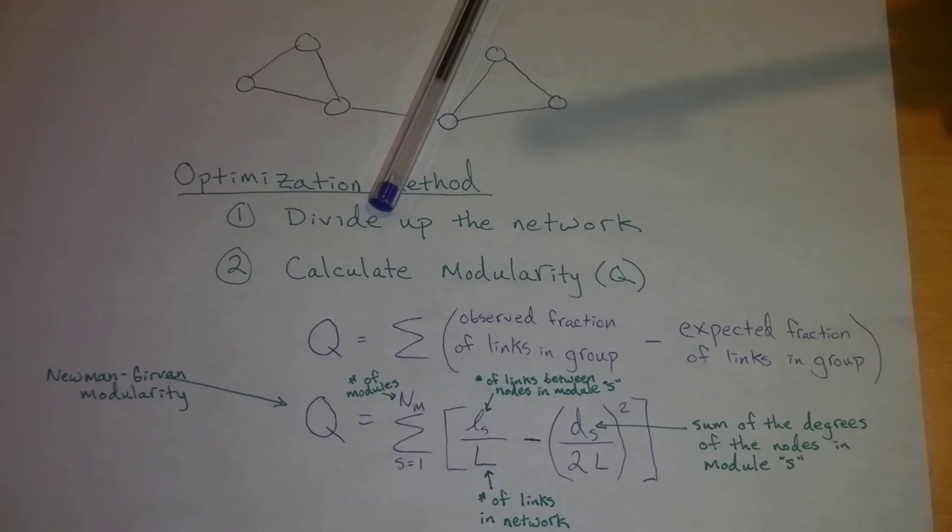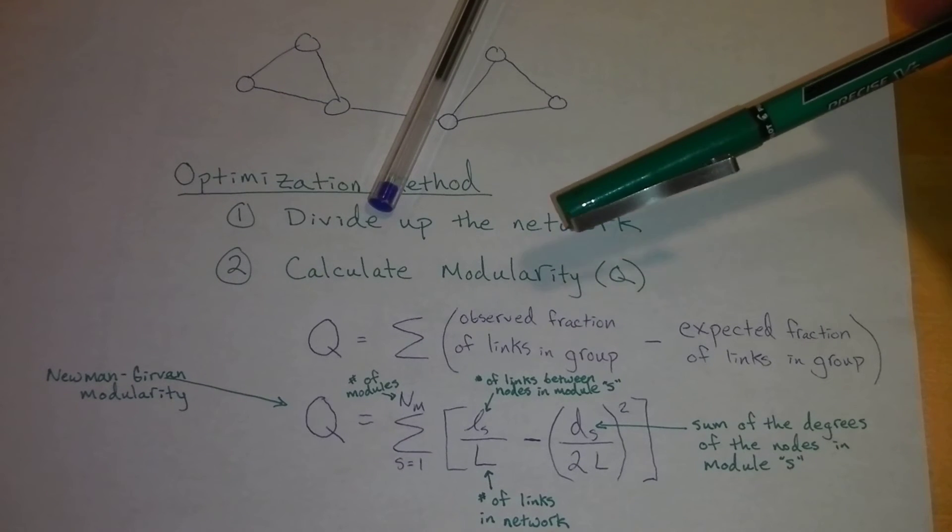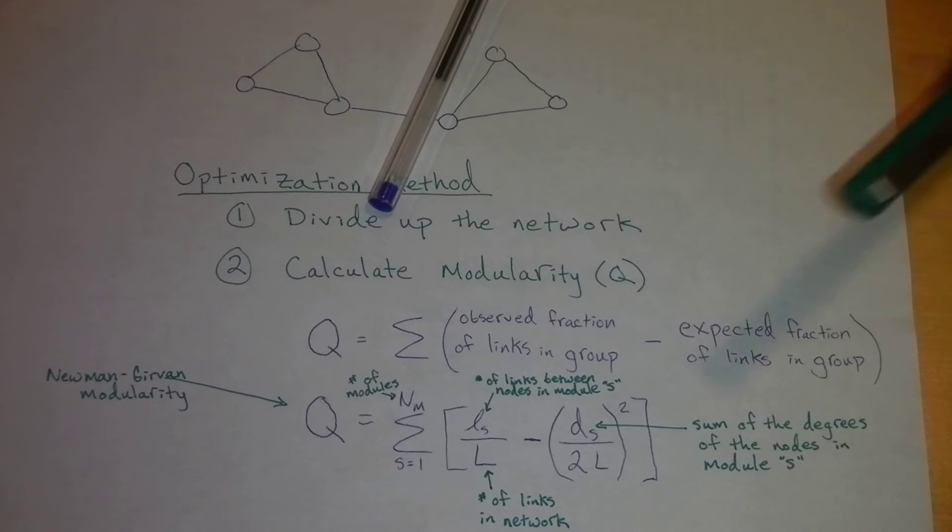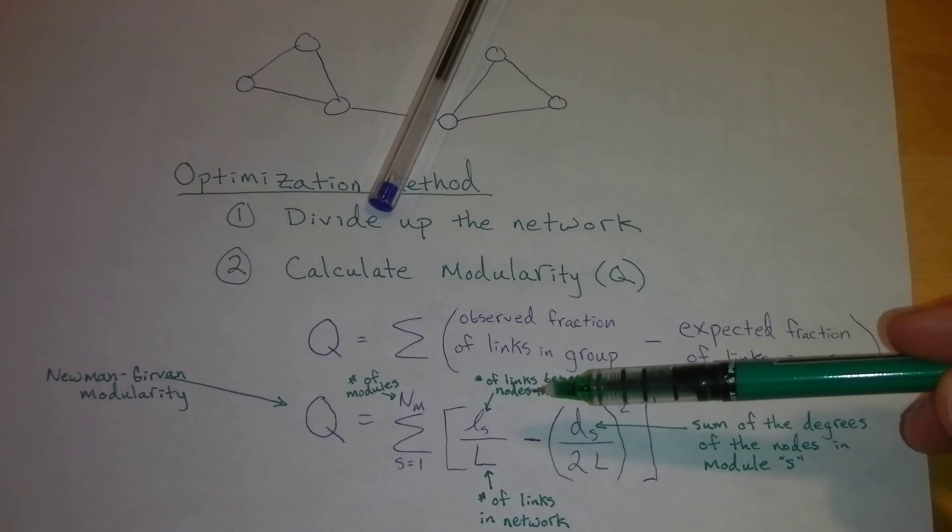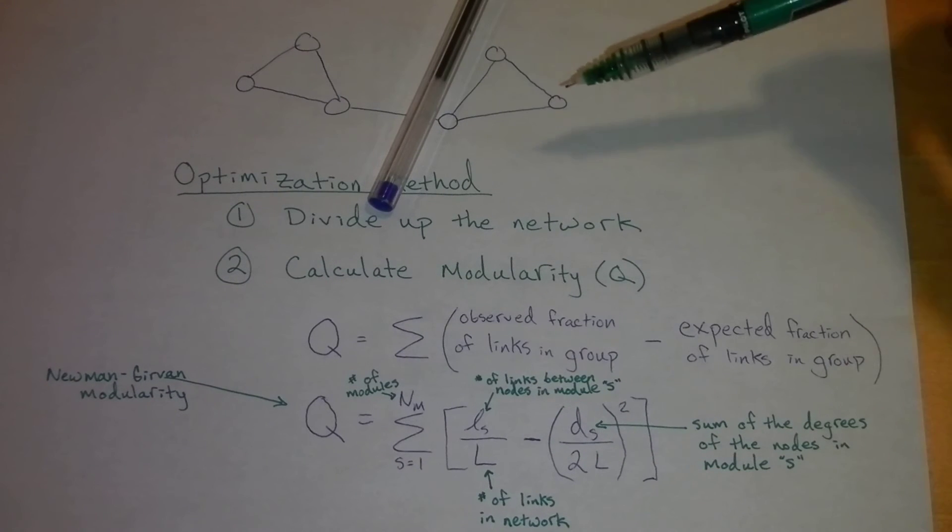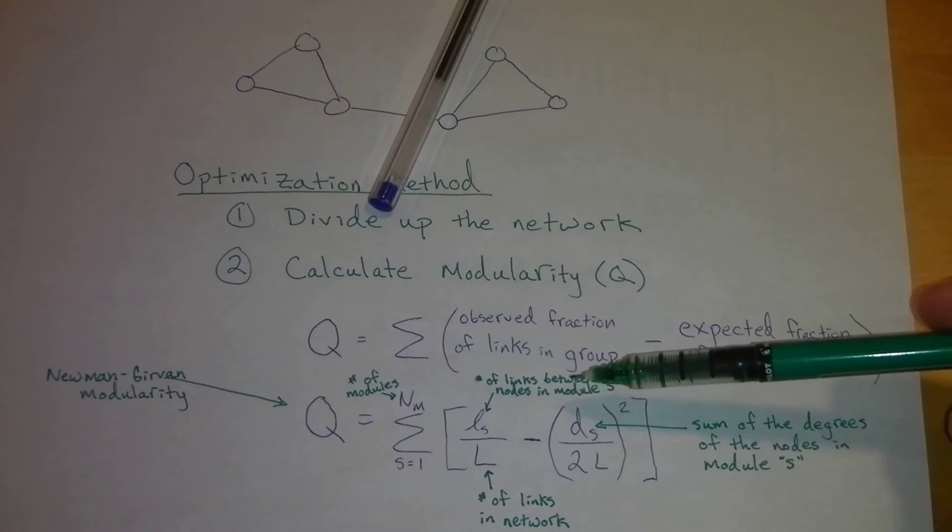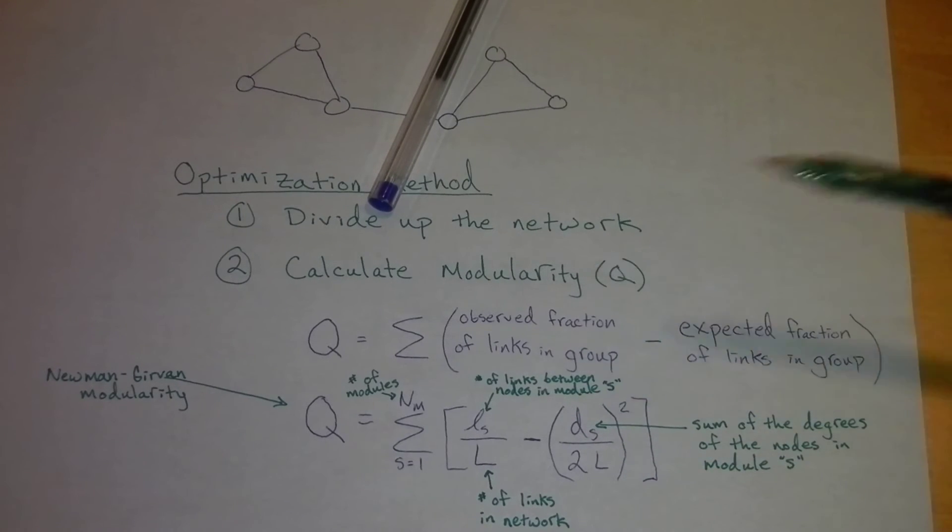Let's take a look at the basic part of the equation. Let's first calculate the observed fraction of links in the group. For each partitioning that we do for each group, we've got these two different groups. We're going to look at the number of links between nodes in module S. Let's just take this as module S.